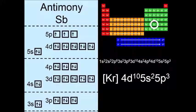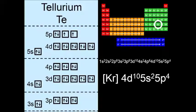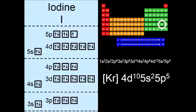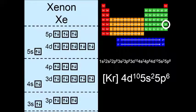And this is antimony. So a single electron is now in each of those 5p orbitals. So we can go back and double up. Tellurium. Iodine. And then finally, the noble gas, xenon.